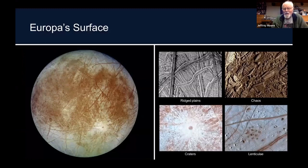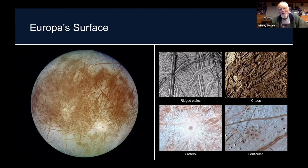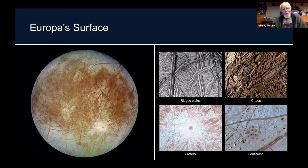Europa's surface has four major landform types. There are the pervasive ridged plains, which dominate the surface. There are patches that have broken up to form so-called chaos terrain. There are a few impact craters — not very many — and based on calculated impact flux rates we've determined the average age of Europa's surface is only about 50 million years old, with some places probably very young. And last but not least are the so-called lenticulae, which we used to call spots, domes, and moats.